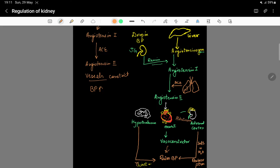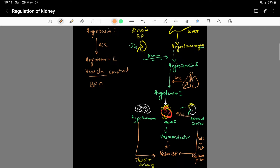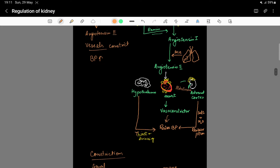Through the adrenal cortex, aldosterone promotes absorption of salt and water, which increases blood pressure and blood volume. Directly, the hypothalamus region is also involved — hormones from the hypothalamus activate the body's thirst mechanism so that you drink more water. In this way the RAAS raises BP.